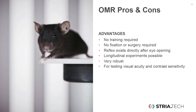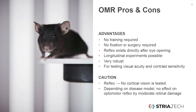Two words of caution, though. Because it is a reflex, it does not measure conscious vision — it is a subcortical reflex. And second, because it is so robust, moderate decline of vision might not be reflected in a decline of the optomotor performance. This depends very much on the disease model. We will have one case study later where we see that local injuries of the retina do not alter the optomotor reflex.